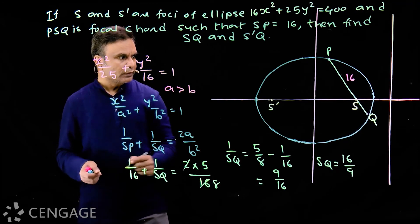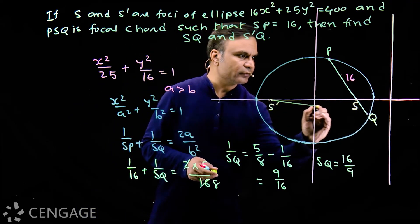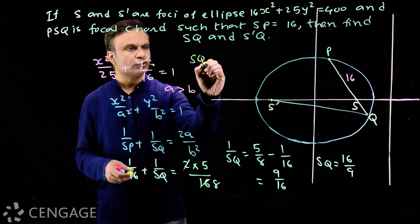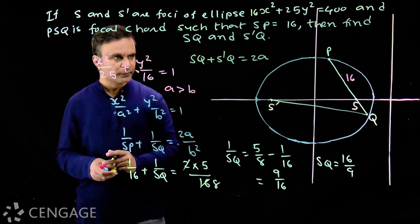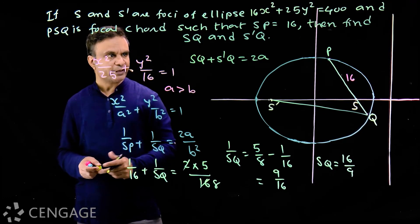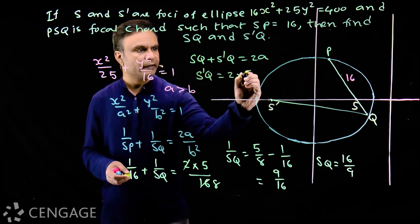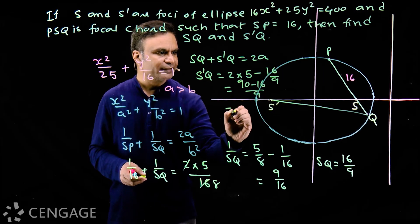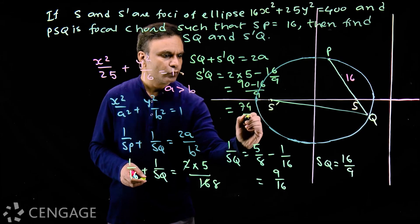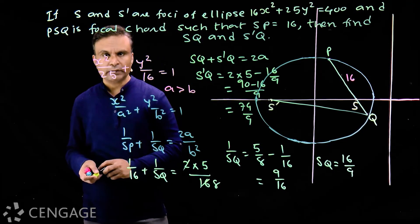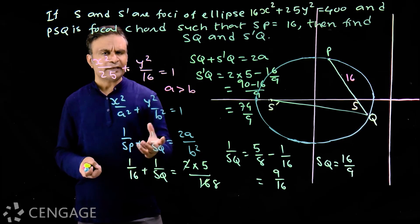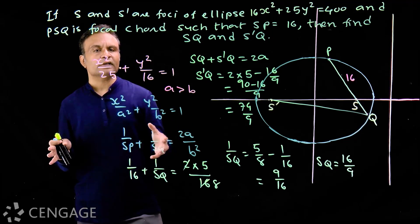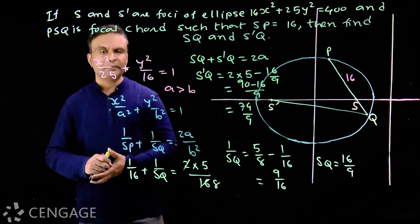To find S'Q, join S' and Q. Using the focal property of ellipse for point Q: SQ + S'Q = 2a. Substituting SQ = 16/9 and a = 5: S'Q = 2×5 minus 16/9 = 10 minus 16/9 = (90 minus 16)/9 = 74/9. So S'Q = 74/9. We used two properties: that the semi latus rectum is the harmonic mean of the segments of a focal chord, and the focal property that for any point on the ellipse, the sum of the two focal distances equals the length of the major axis.